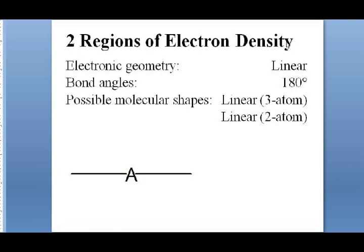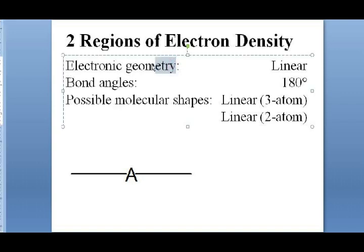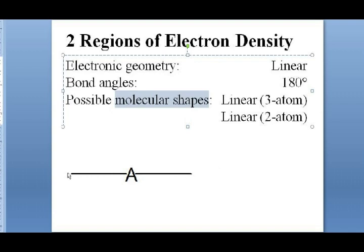If there are two regions of electron density, the best way for them to separate is by moving 180 degrees apart, giving a linear electronic geometry with 180-degree bond angles. Molecular geometry is defined by where the atoms are — if there's an atom on each end, it's a linear three-atom molecule. If one position is a lone pair, the molecular shape is still linear but now a two-atom linear molecule.